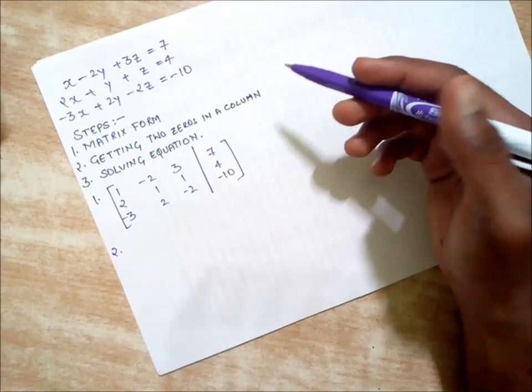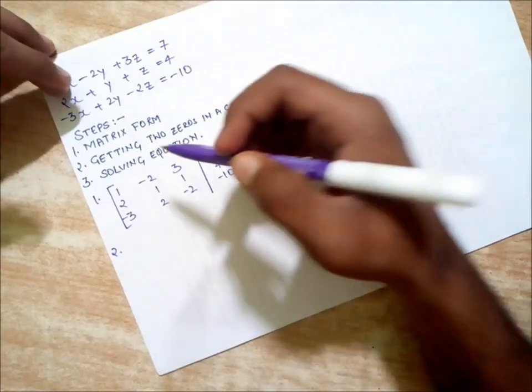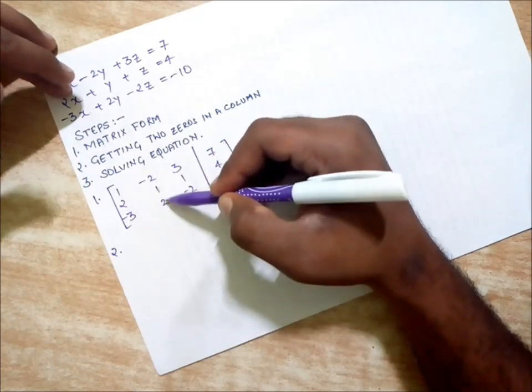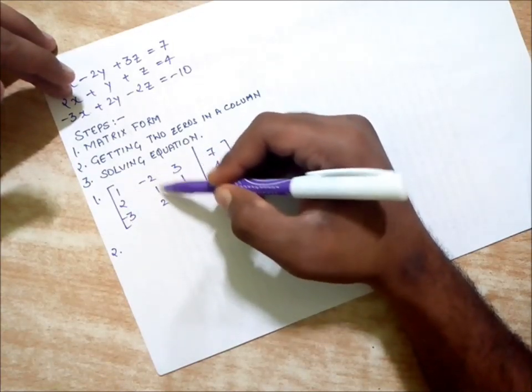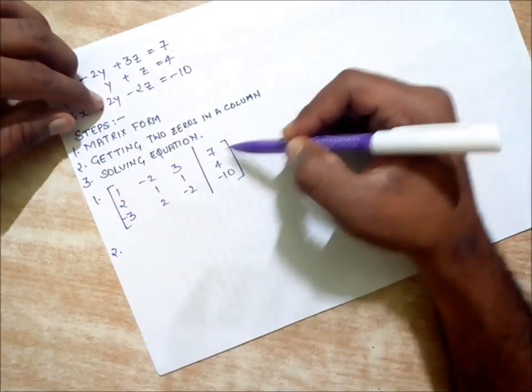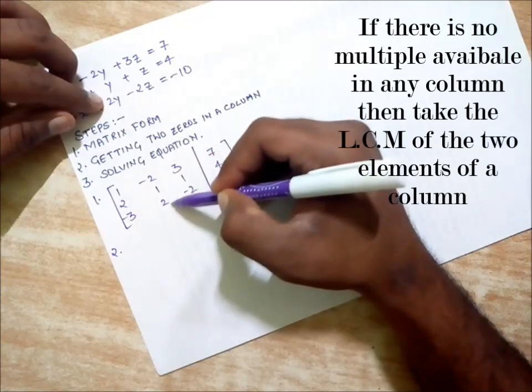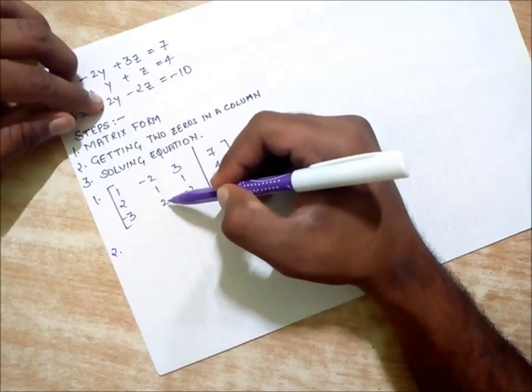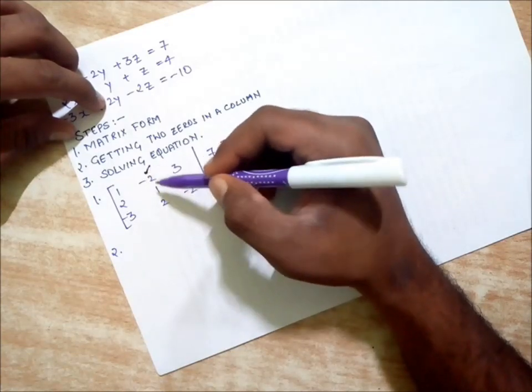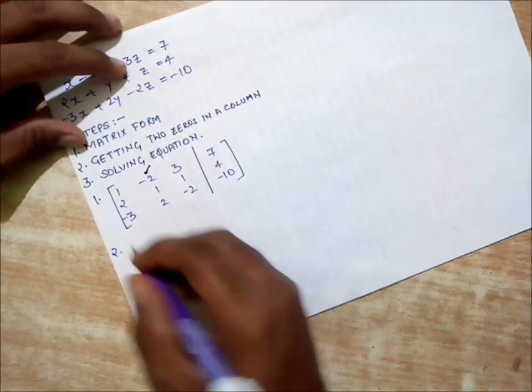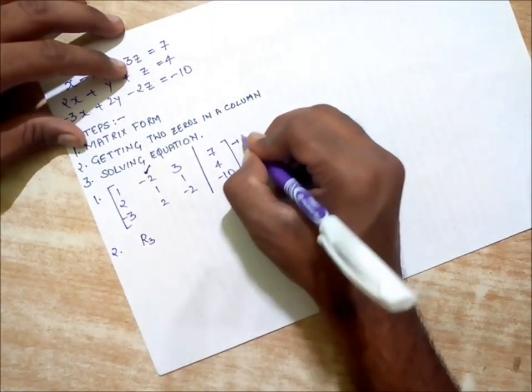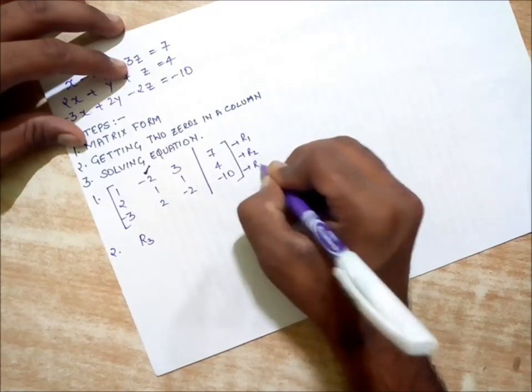The easiest way to generate a zero is to look for similar kind of values or multiple values. For example, in this column we don't have any similar kind of numbers. In this one we do have similar elements: minus two and two. So if I add this row to this row, I'll be getting a zero over here. I have selected this column.